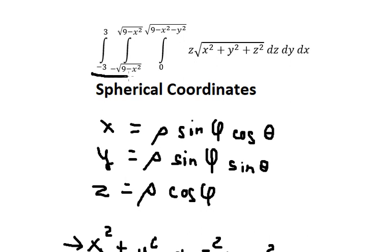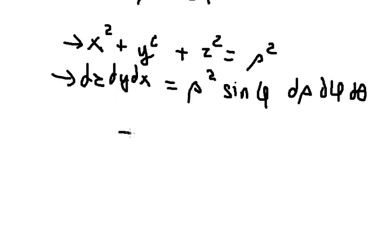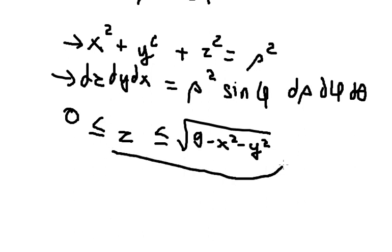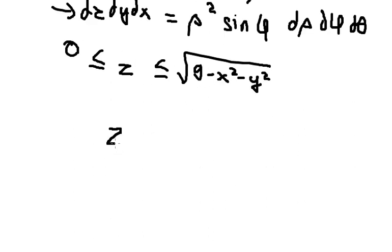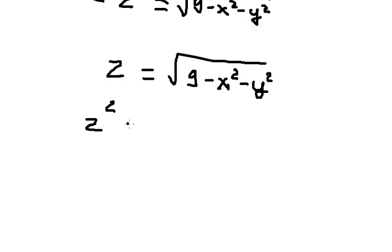Now we need to consider the bounds. If we look carefully, we can see that z is between zero and the square root of 9 minus x² minus y². We need to concentrate on this expression and square both sides to eliminate the square root.